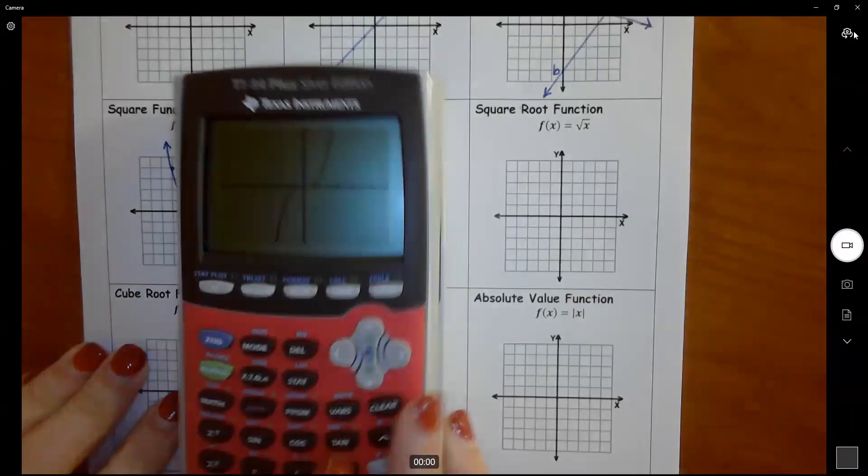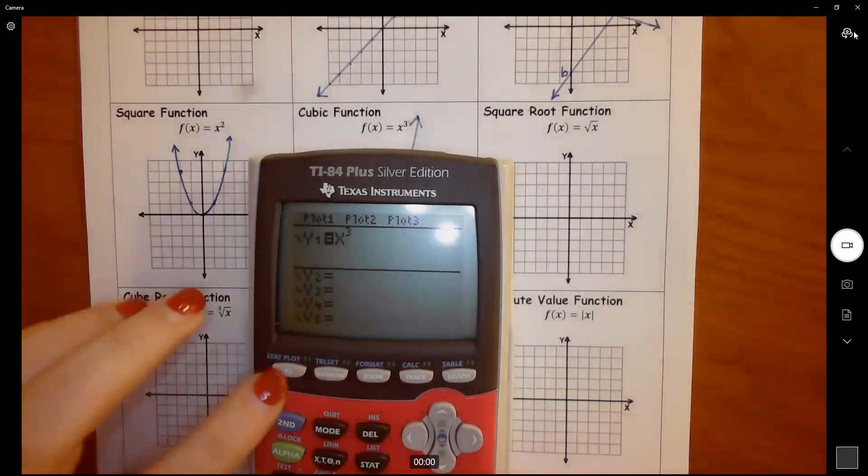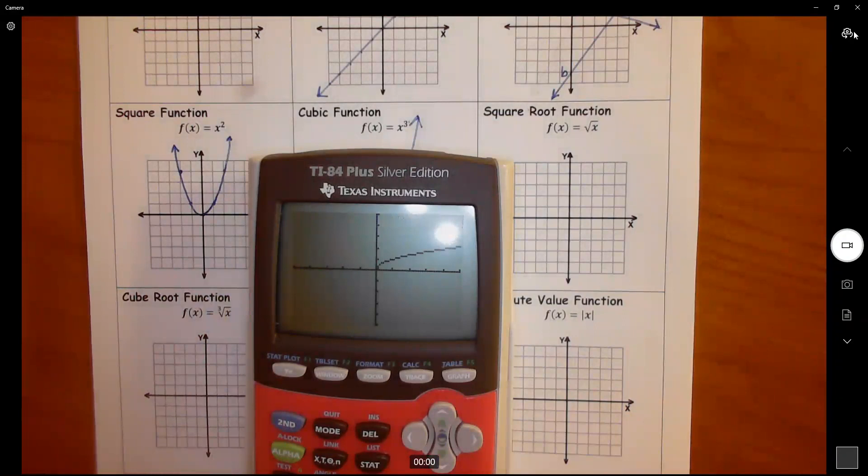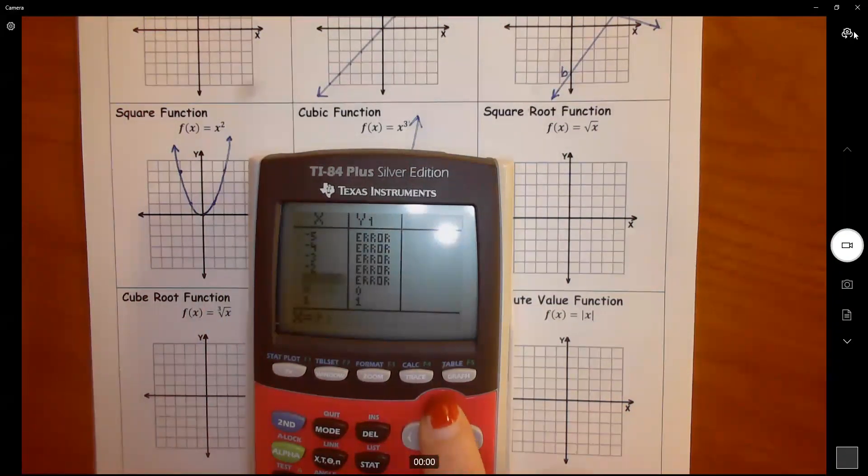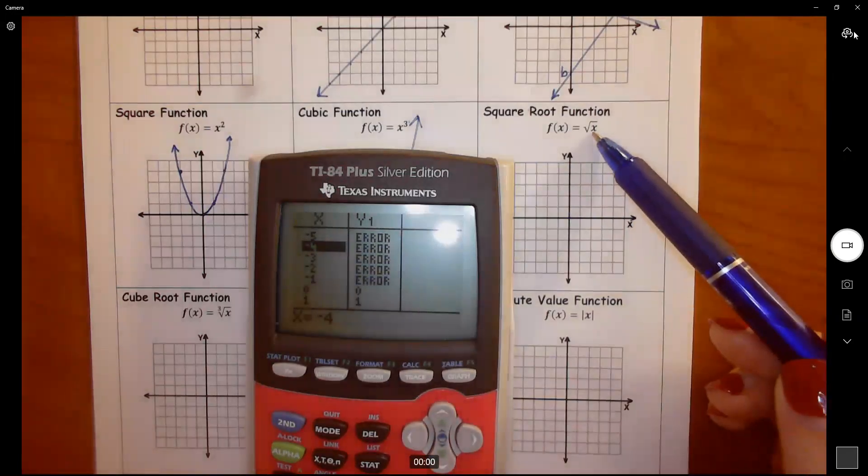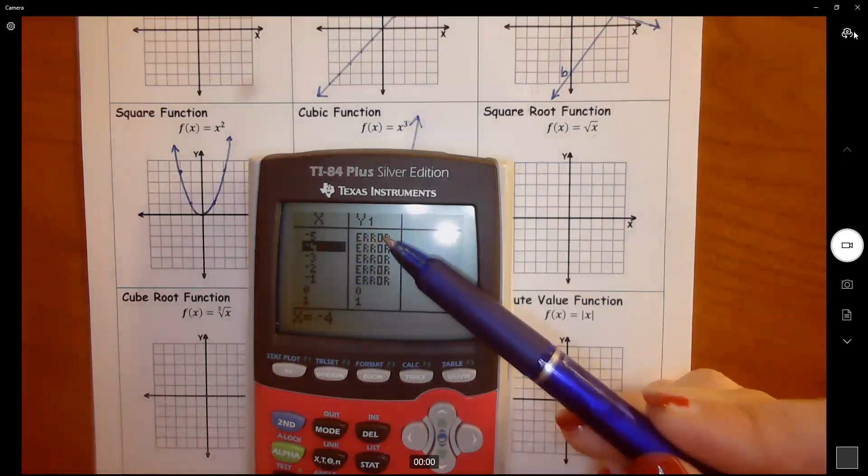Then we have the square root of x. So square root of x. When I look at that table, we get errors all over here. Why is that? Well, my mathematical domain says I cannot take the square root of a negative number. So when I put the square root of negative 5, that's imaginary. And that says, nope, we can't do that.